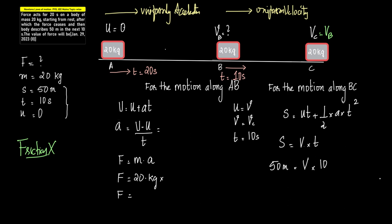For the motion along AB, for the equation of motion, v equals u plus at, a equals v minus u by t. Now what is this v? This is vb. What is t here? t here is equal to 20 seconds. Therefore we can write this is equal to vb minus 0 by 20, which is equal to vb by 20.